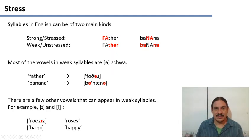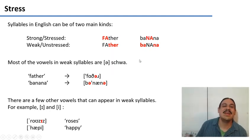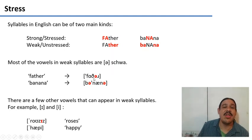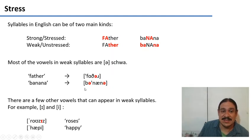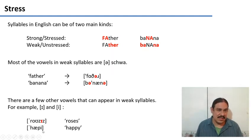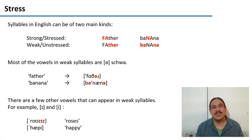For example: 'father' and 'banana.' There's something really interesting about English — most unstressed syllables have schwa as their vowel; the vowels transform into schwas. So 'father' and 'banana' — the unstressed syllables are mostly schwas. There are other vowels that can appear in weak syllables in English, such as the vowel in 'roses' and 'happy,' but not all English vowels can appear in unstressed syllables.